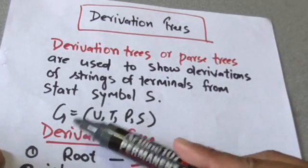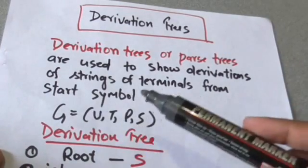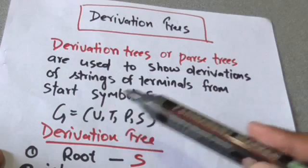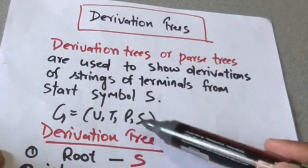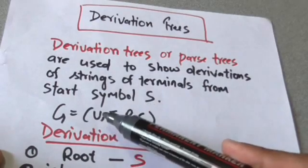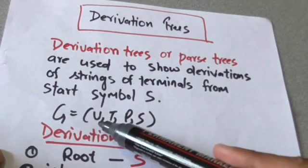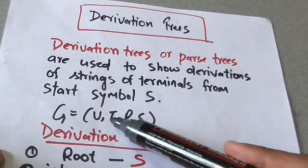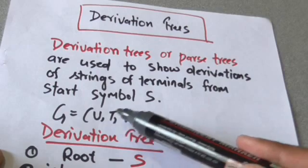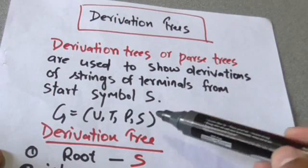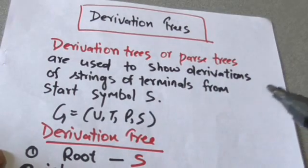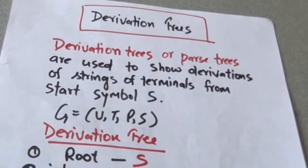Let's suppose there is a grammar G. G equals (V, T, P, S), where V is the set of variables, T is the set of terminals, P is the set of production rules, and S is the start symbol.